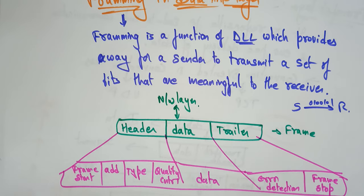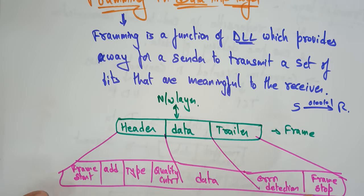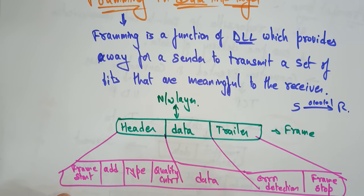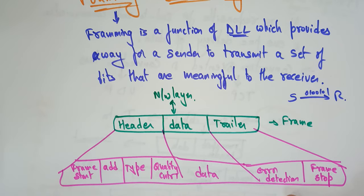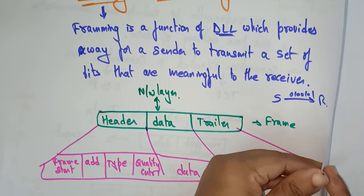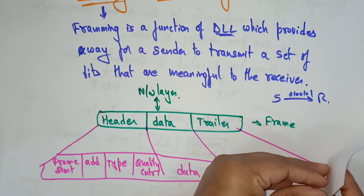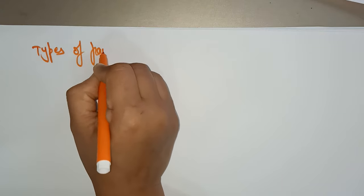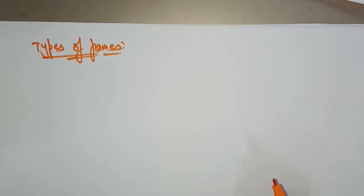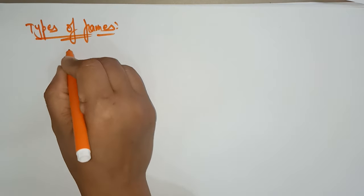So this is exactly what each frame consists of. Framing is a function of the data link layer which provides a way for a sender to transmit a set of bits that are meaningful to the receiver. The data link layer extracts messages from the sender and provides them to the receiver by including the sender's and receiver's address. There are two different types of frames: one is a fixed length frame and the next is a variable length frame.